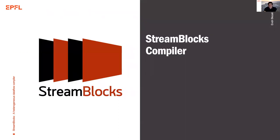StreamBlocks takes a dataflow program described in CAL and generates software code for multicore execution, hardware code for FPGA IP cores, or a combination of both. StreamBlocks is open source. The compiler flow starts with CAL fed into Tyco — the compiler that translates CAL to actor machines, initially developed at a Norwegian university and now co-developed at EPFL.